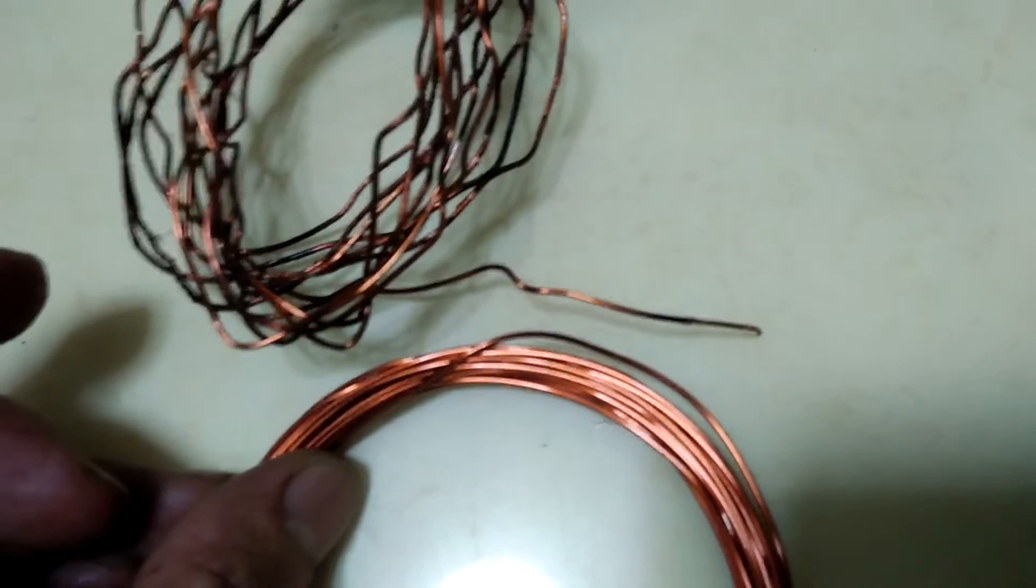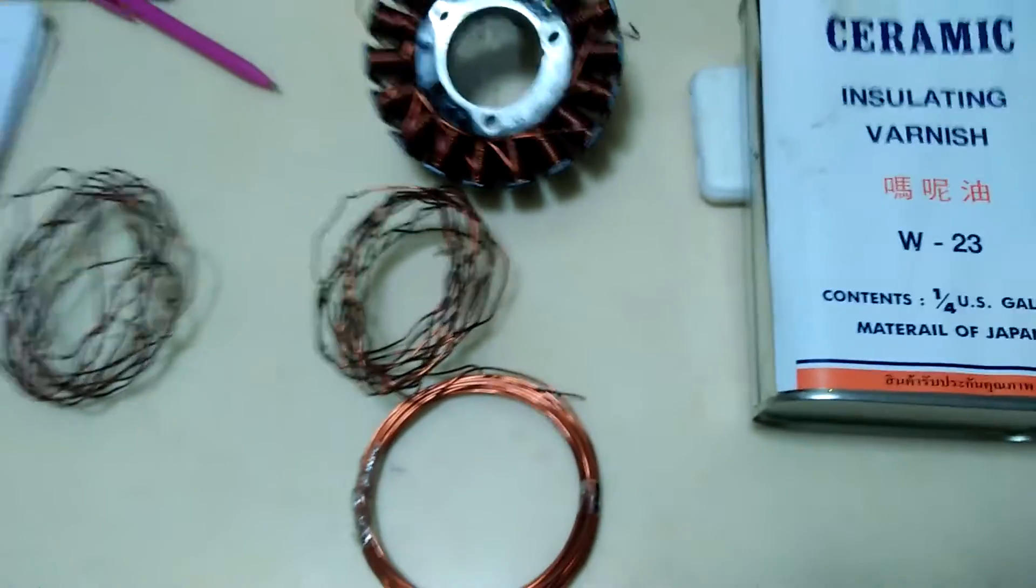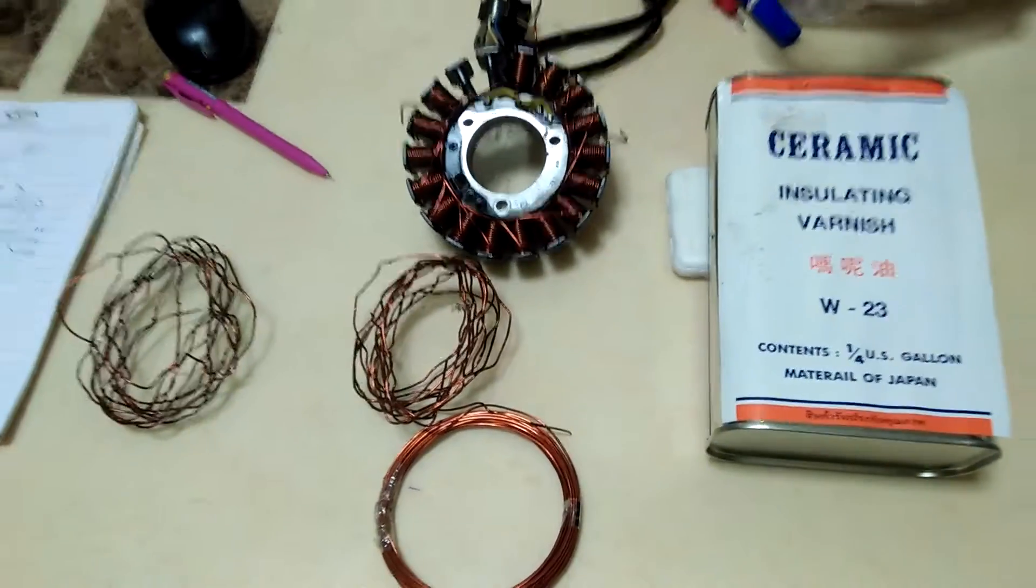Here are the old wires I unwound from the two poles of the stator, and this is the new enamel wire I will use. I will also be using this insulating varnish especially made for rewinding.